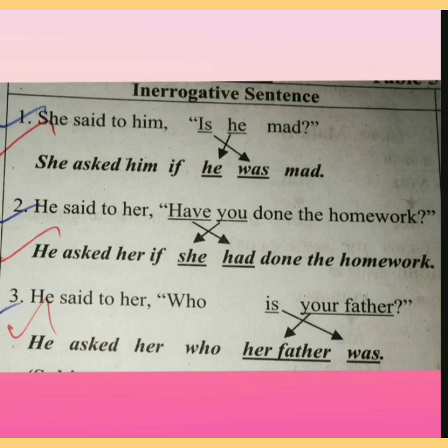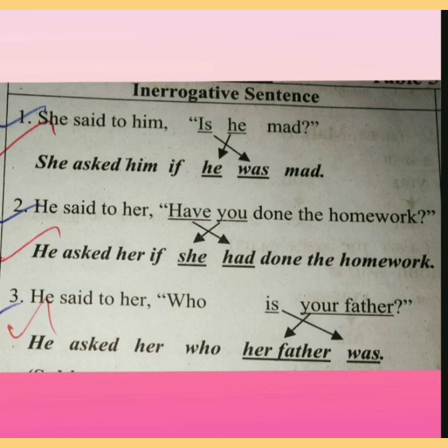Another interrogative example: 'He said to her, who is your father?' 'Said to' changes to 'asked.' The indirect speech: 'He asked her who her father was.' Simple present 'is' changes to simple past 'was.' Also, present perfect changes to past perfect. Have you all understood this?